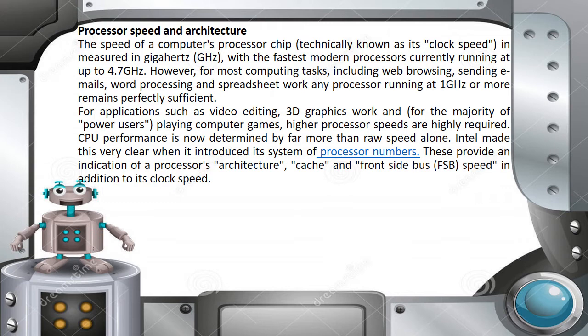CPU performance is now determined by far more than raw speed alone. Intel made this very clear when it introduced its system of processor numbers, which provides an indication of a processor's architecture, cache, and front-side bus speed.